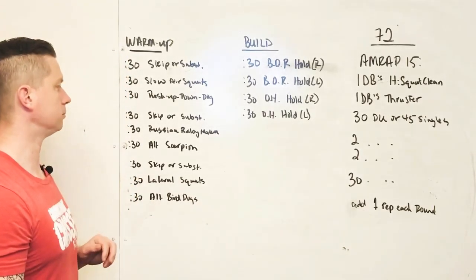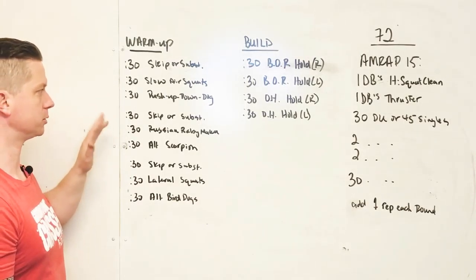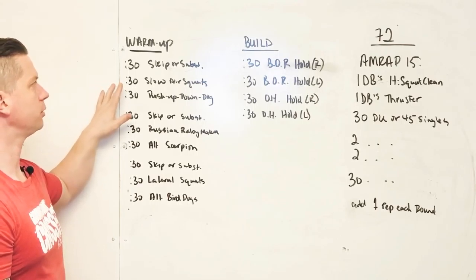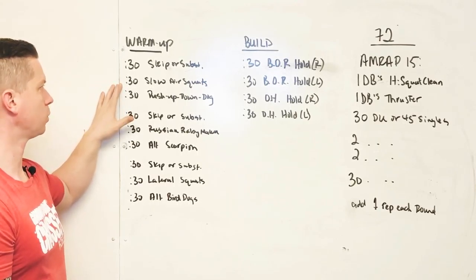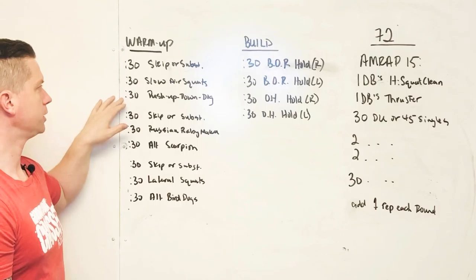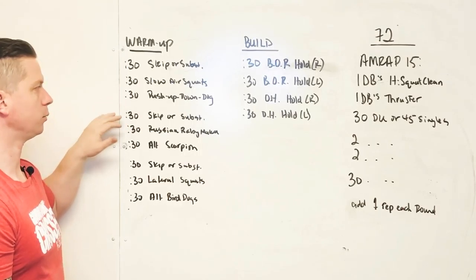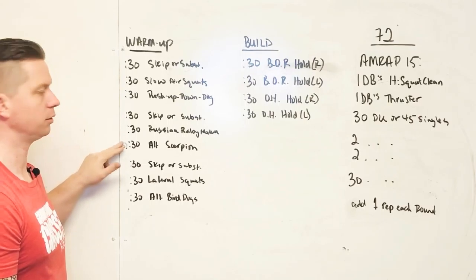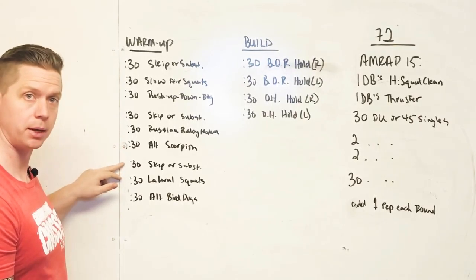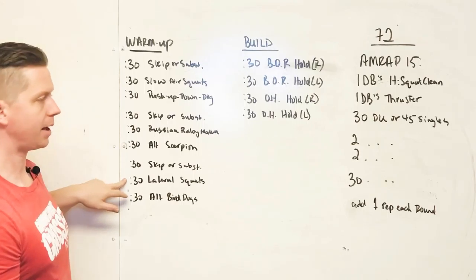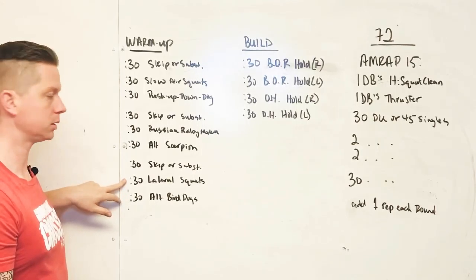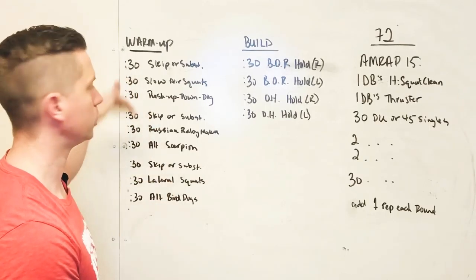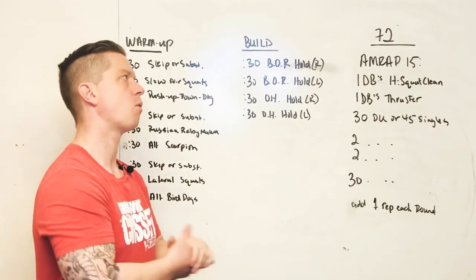Warm-up today: what we're going to do is we skip and then we do some stuff, then we skip and then we do some stuff. So we do 30 seconds of skip, 30 seconds of just slow air squats working out the bugs, 30 seconds of push-up down dog. Then we go back to skip, do Russian baby makers for 30 seconds, 30 seconds of alternating scorpions, 30 seconds of skip again, and then 30 seconds of lateral squats, opening up the squats a little bit more, and then prepping midline with alternating bird dogs. One time through should have you ready for Workout 72.